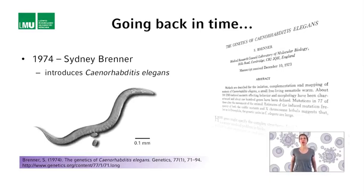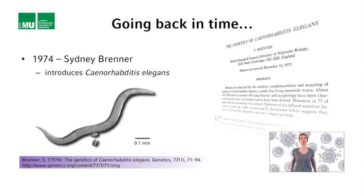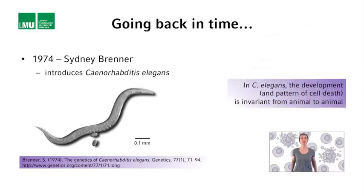Why did C. elegans turn out to be so useful for studies on apoptosis? C. elegans turns out to be so useful because the development of C. elegans, including the pattern of apoptotic cell death, is essentially invariant from animal to animal. This allows the genetic and therefore also molecular dissection of the apoptotic process without any preconceived knowledge.